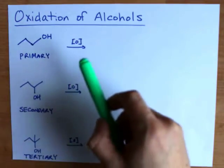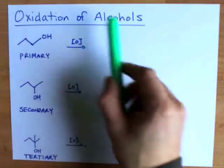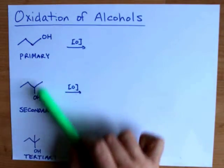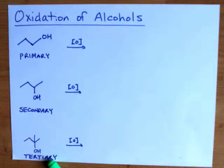Before you figure out what the products of oxidizing alcohols are, you need to figure out if the alcohol is primary, secondary, or tertiary.